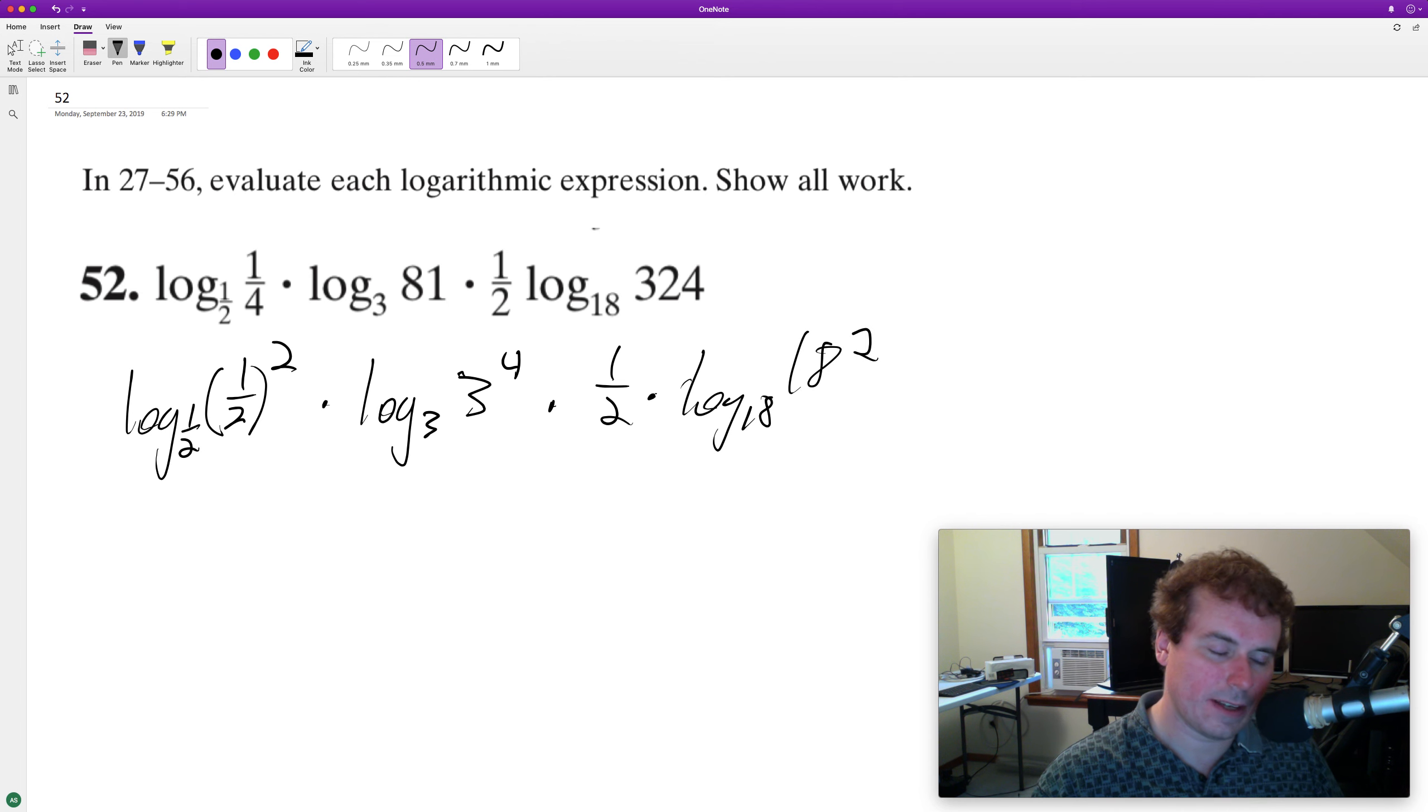So what we do here when we have the same log base and the base of the exponent inside, just get rid of the logs, so 2 times 4 times and then 1/2 times this becomes 2, so this just becomes 1 and we end up with 8 and that's it.